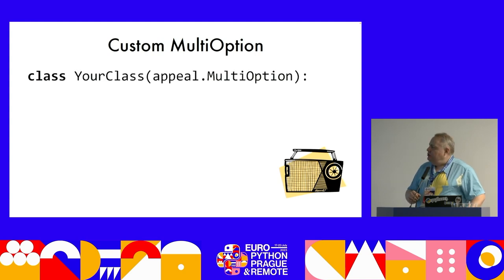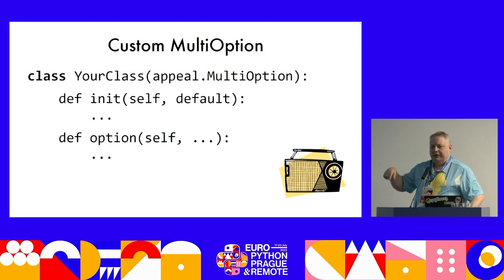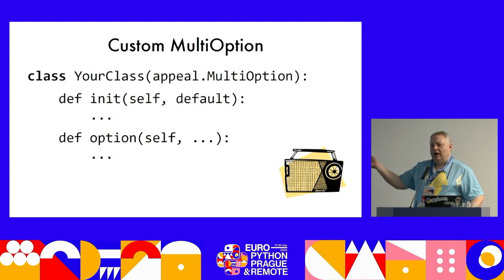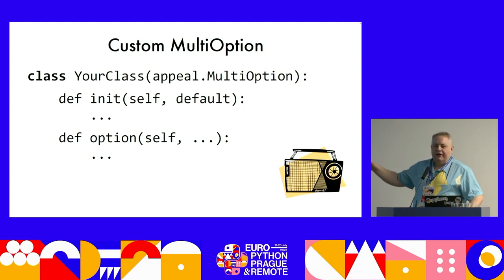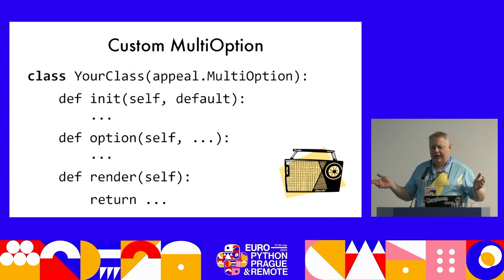You can write your own multi-options by inheriting from the multi-option base class. There are three overloadable methods: init (optional, receives the default value), option (called each time the option appears on the command line — the arguments you declare determine how many op-args are consumed, and annotations/defaults control type coercion), and render (called after all argument processing, returning the value to be passed into your parameter).